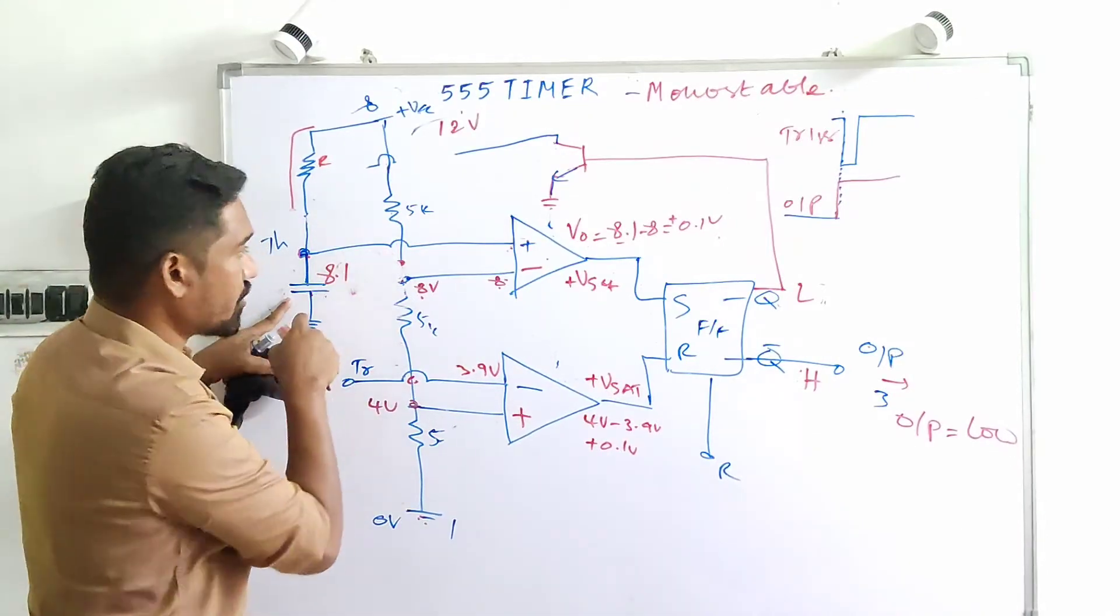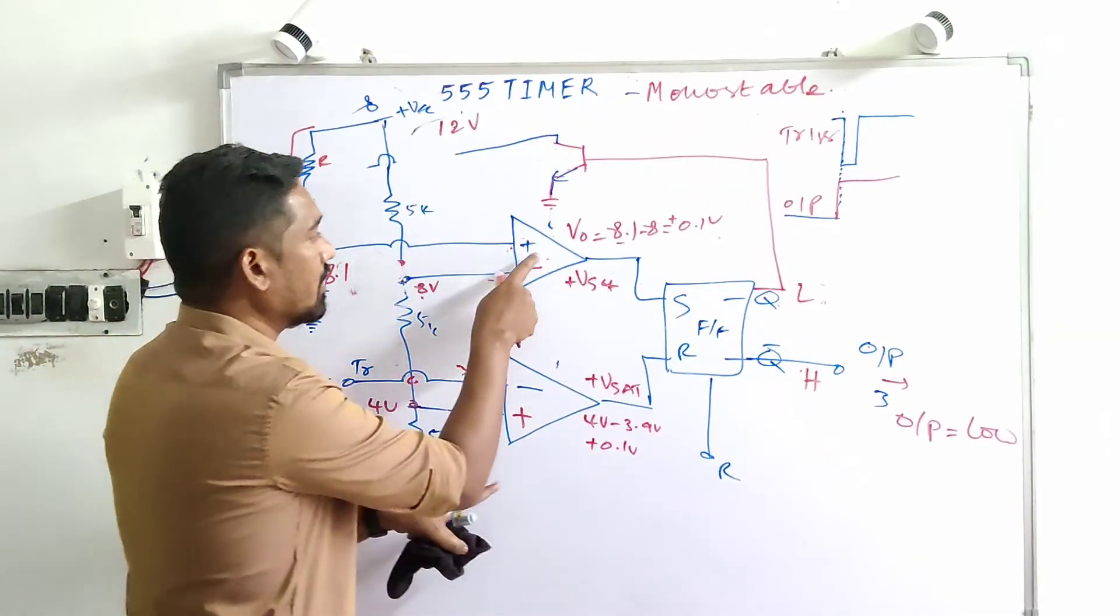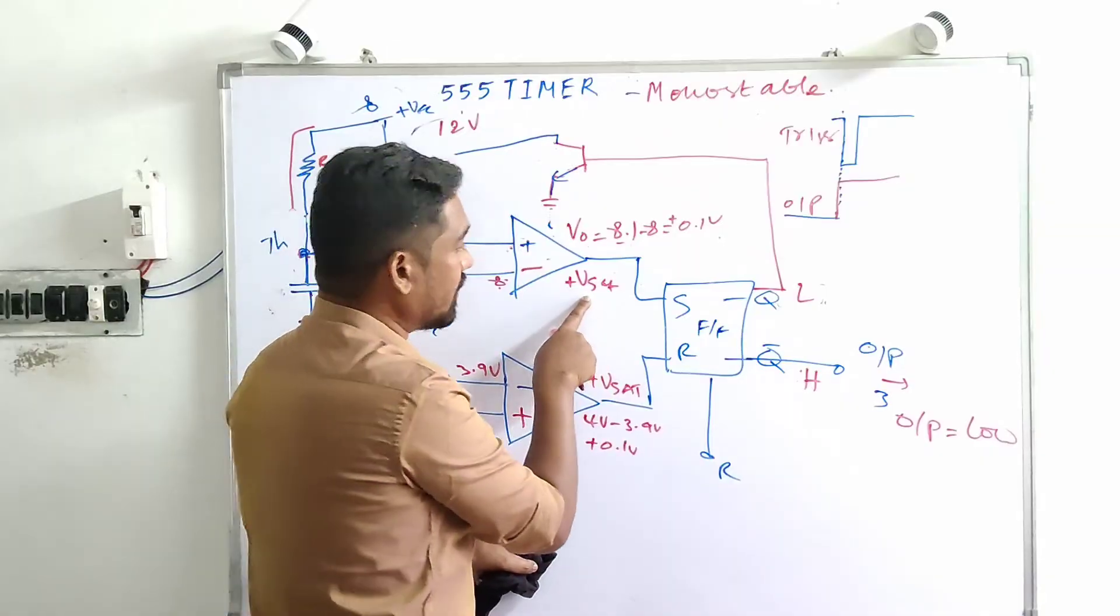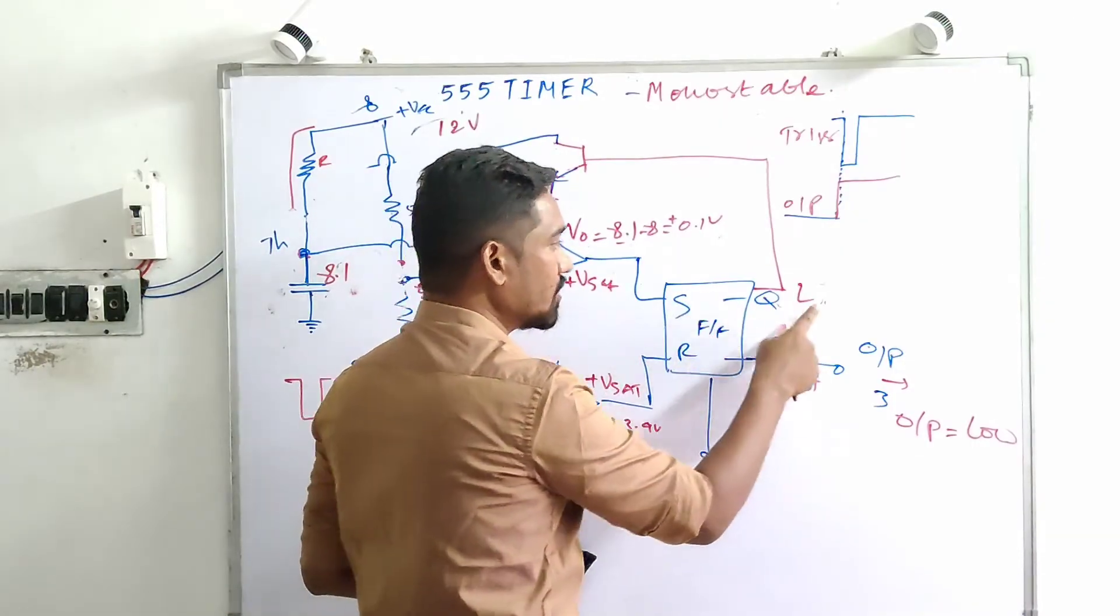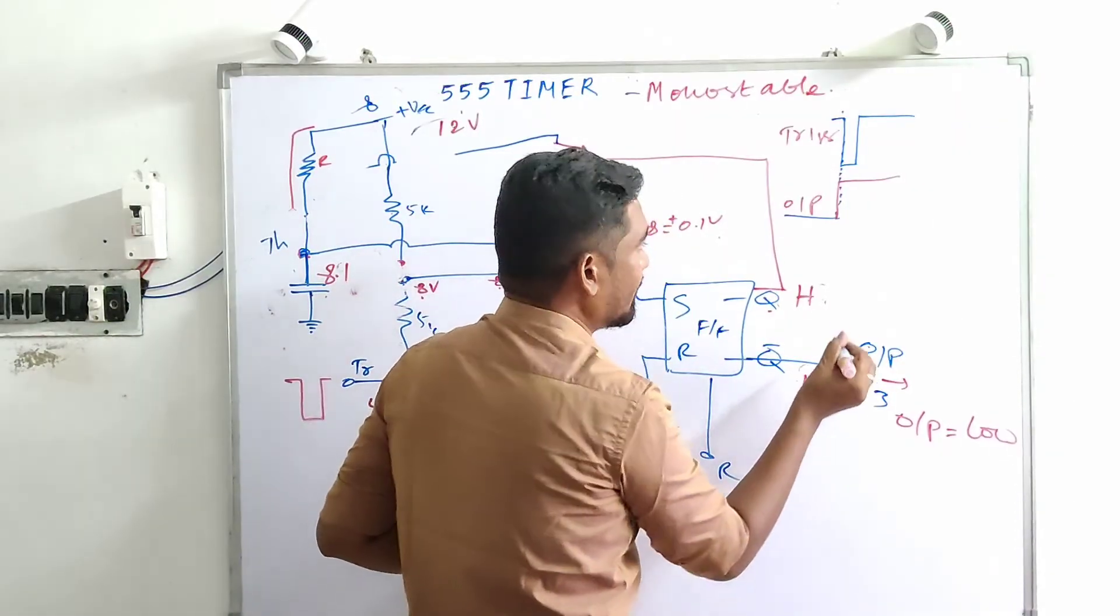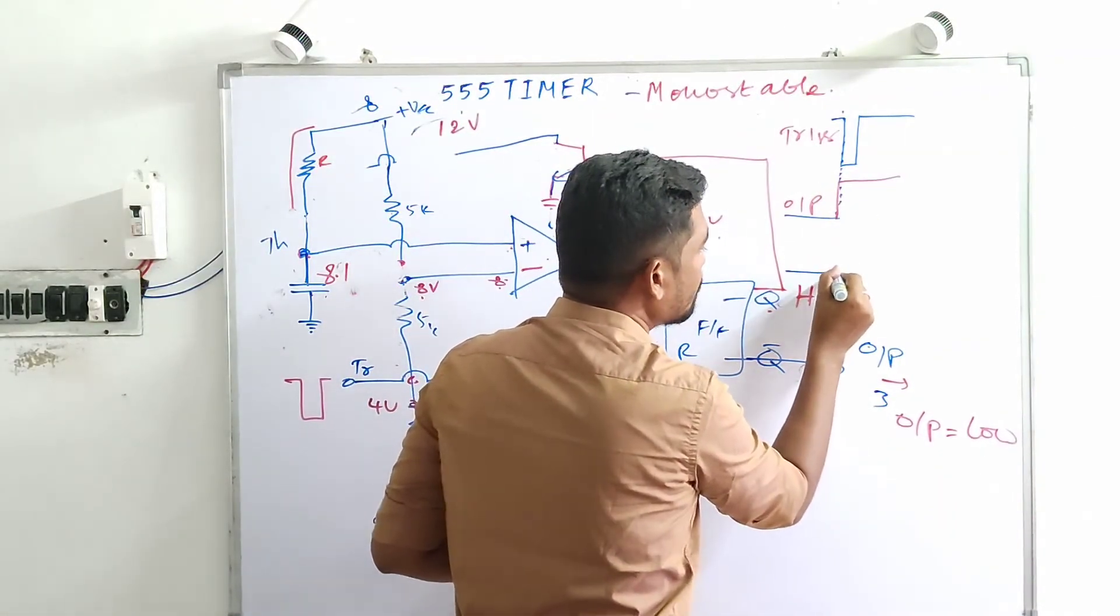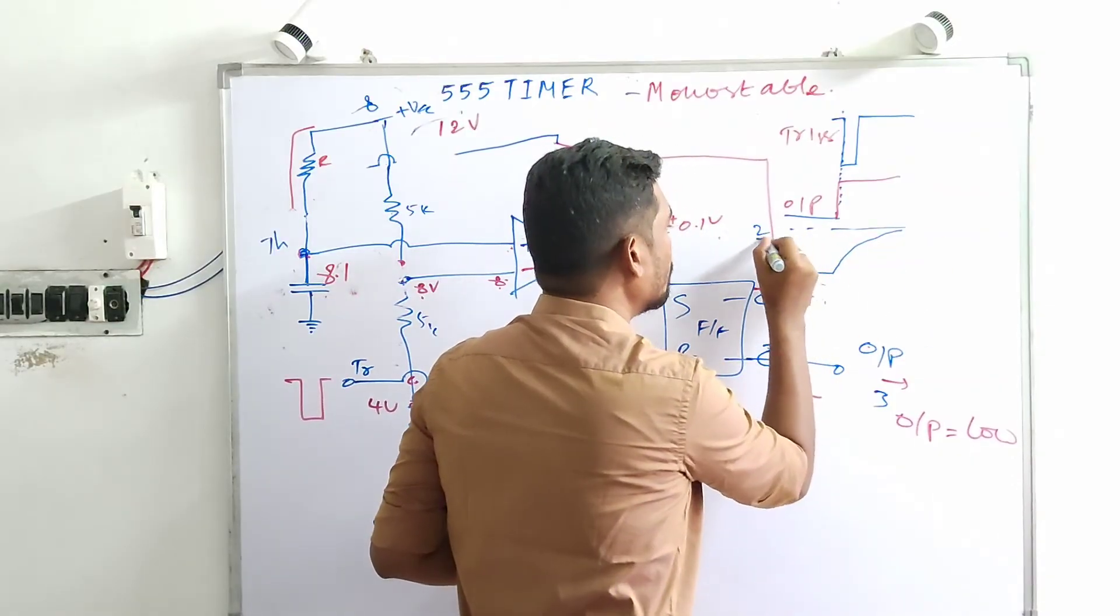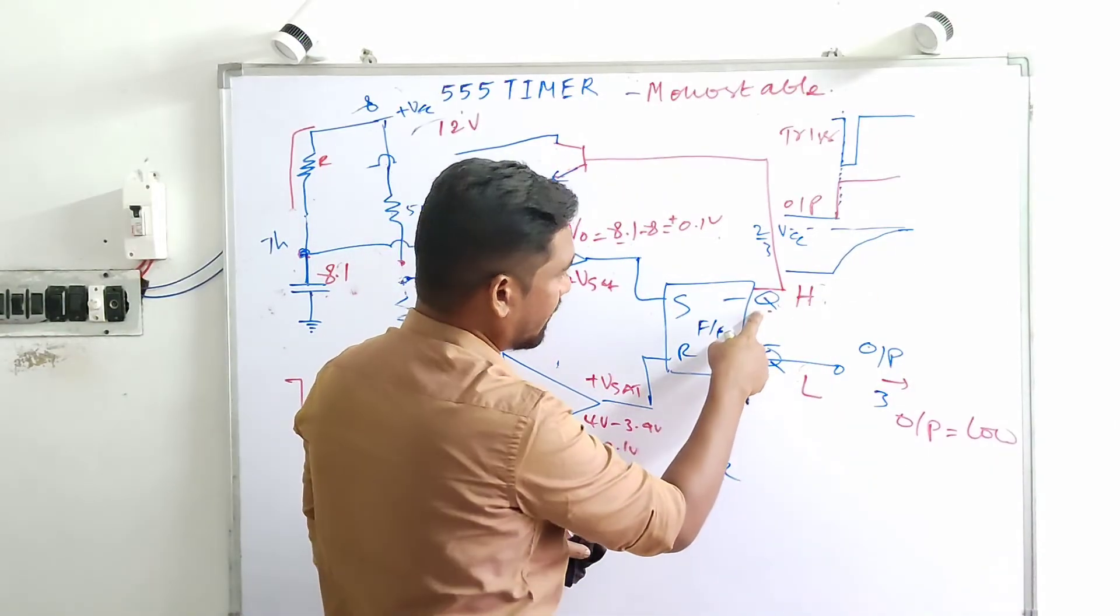Capacitor voltage, this capacitor voltage is given here. Supposing capacitor voltage is 1 volt, V-naught will be 1 minus 8, equals minus 7, so output is minus V-sat. When capacitor voltage is 4 volts, 4 volts here and 8 volts here, V-naught equals 4 minus 8, minus 4, which drives comparator 1 to minus V-sat. When capacitor voltage reaches 8.1 volts, 8.1 minus 8 equals 0.1 volt. This positive 0.1 volt is enough to drive the comparator to plus V-sat. This plus V-sat goes to the flip-flop.